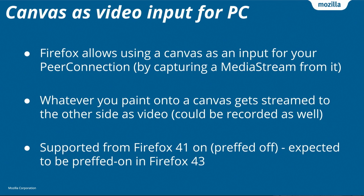So what we have been working on is using a canvas as a video input for a peer connection. Hopefully the web developers here will be familiar with the canvas — for the VoIP guys, it's probably a more new thing. Basically what it allows you to do is take a canvas instead of a camera, and you get a video stream out of it, and you can connect that to your peer connection. It's supported in Firefox 41, which I think is in beta right now.